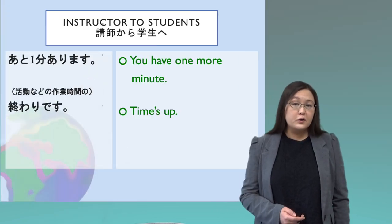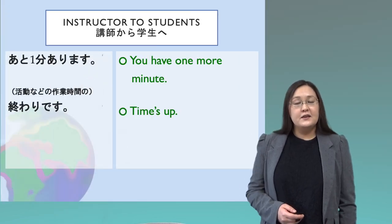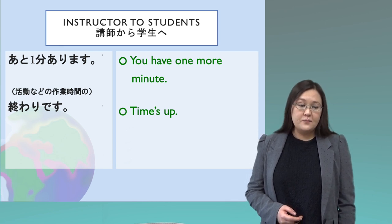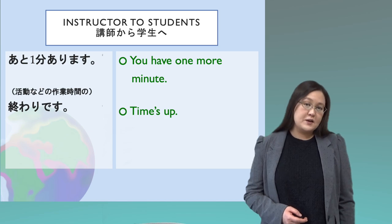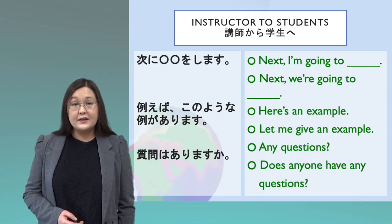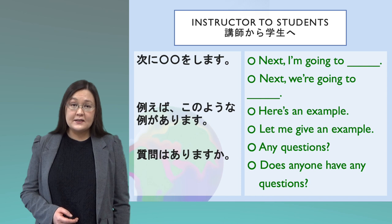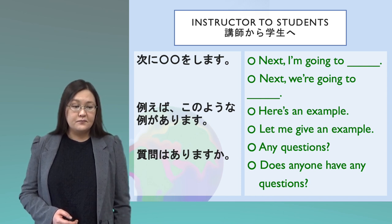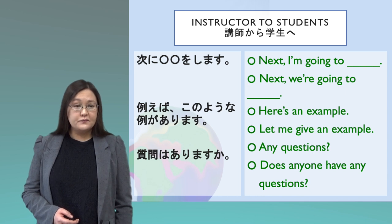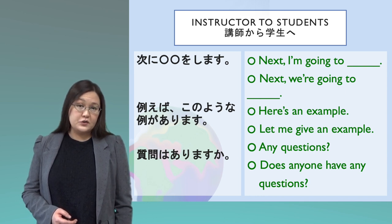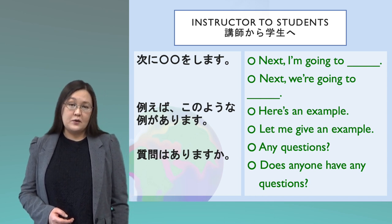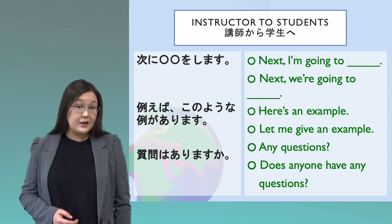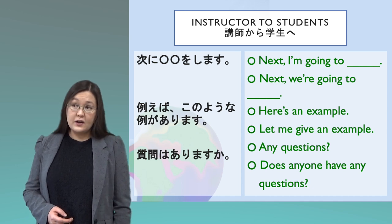When you are doing group work or pair work in class, you might have a time limit, and the instructor will say, 'You have one more minute,' or 'Time's up.' Sometimes the instructor will explain what will happen next or ask if students have any questions: 'Next, I'm going to...', 'Next, we're going to...', 'Here's an example,' 'Let me give an example,' 'Any questions?', or 'Does anyone have any questions?'